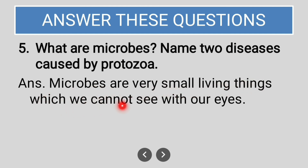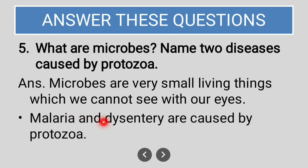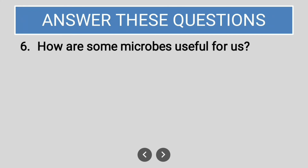Fifth question: what are microbes, and name two diseases caused by protozoa. Microbes are very small living things which cannot be seen with our eyes. Malaria and dysentery are caused by protozoa.